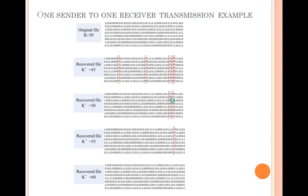Next, LT code is used in the unicast scenario. 15 source packets with each packet containing 8 bits are generated. When receiving 45 encoded packets, the original file cannot be fully recovered. When receiving 15 packets, still 2 source packets cannot be successfully decoded. When the number of received packets increases to 60, all source packets are recovered. Therefore, when receiving a large enough number of encoded packets, the receiver can recover the original file.